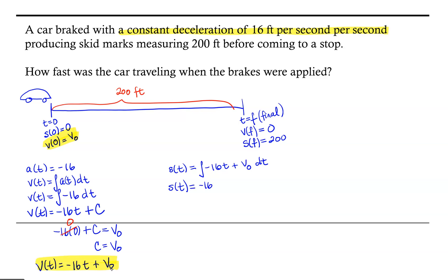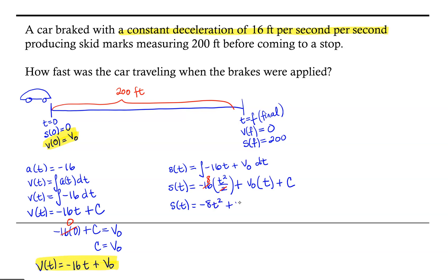Finding our anti-derivative: s of t is negative 16 times t squared over 2 plus v naught times t. Remember, v naught is a constant — that unknown initial velocity — so it becomes v naught times t. Taking the derivative of v naught times t gives simply v naught. Position also has its own constant of integration, c. The 2 and the 16 simplify to give us negative 8, so our position function is negative 8t squared plus v naught times t plus c.